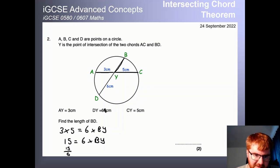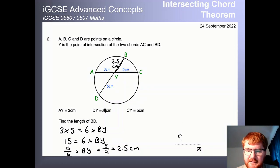And then we can just divide by six on both sides. So if we do that, we get 15 over six is equal to BY. Of course, we can simplify this fraction by dividing by three top and bottom. That gives us then five over two equal to 2.5 centimetres. Notice the reading of the question here. They don't just want BY, but they actually want BD. So that's just going to be six plus 2.5, giving us 8.5 centimetres.